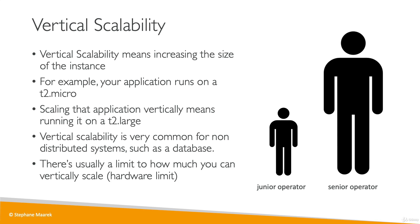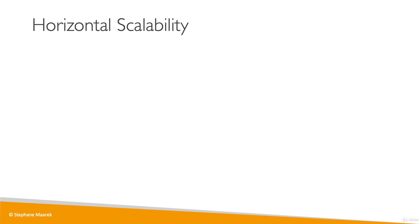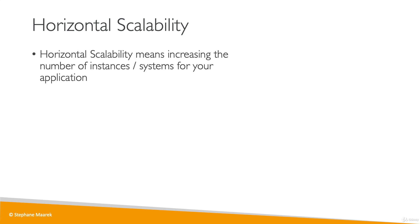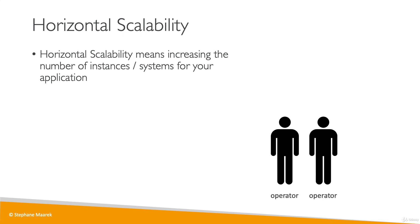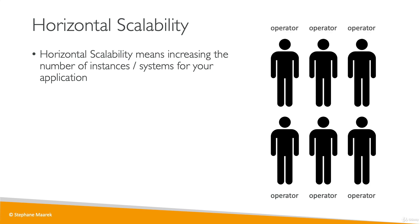Even though nowadays these hardware limits can be very, very high. Next is horizontal scalability. That means that instead of increasing the size of your EC2 instance, you increase the number of instances or systems for your application. Back to our call center example: we have an operator and we want to do horizontal scalability — that means we will add another operator. And if we need to handle more calls, we will add another operator, and so on. So maybe we can scale horizontally from one operator all the way to six operators.